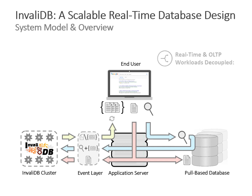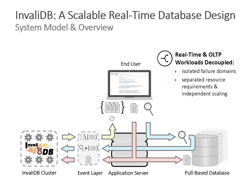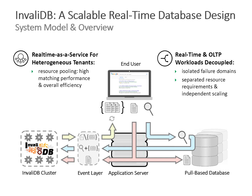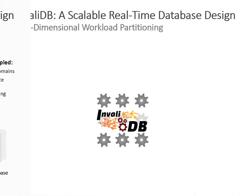This architecture has two big advantages. First, real-time and OLTP workloads are decoupled — matching happens within the InvalidDB cluster rather than the application server, so an overload in real-time workload cannot bring down the application server. We can also scale the InvalidDB cluster independently to beef up real-time capabilities. Second, since all resources are decoupled through the event layer, we can exploit resource pooling and multi-tenancy — adding new clients is cheap, and we have a big shared cluster that can buffer load spikes.